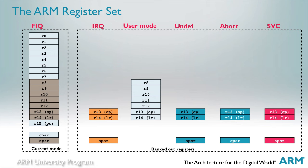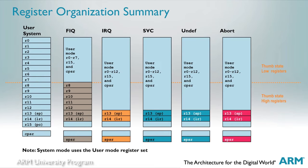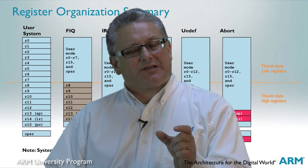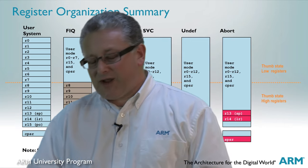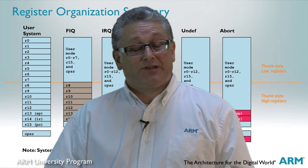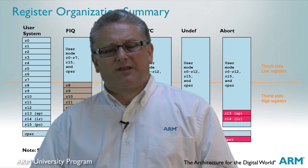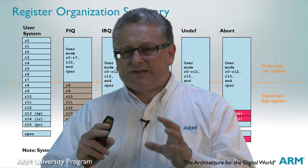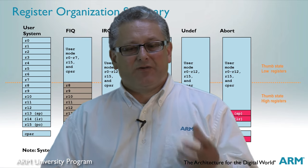System mode uses the same registers as user mode — the only difference is it's privileged. When operating in Thumb state, Thumb instructions are only 16 bits in size, meaning most of them don't include fields large enough to address all 16 registers. They can only directly address the lower 8 registers, which we refer to as the Thumb state low registers. R9 to R15 are the Thumb state high registers, and there are only one or two instructions in Thumb state that can access those. Note that this register set and organization applies only to Cortex-A and Cortex-R cores — Cortex-M cores have a quite different register set organized in a quite different way.